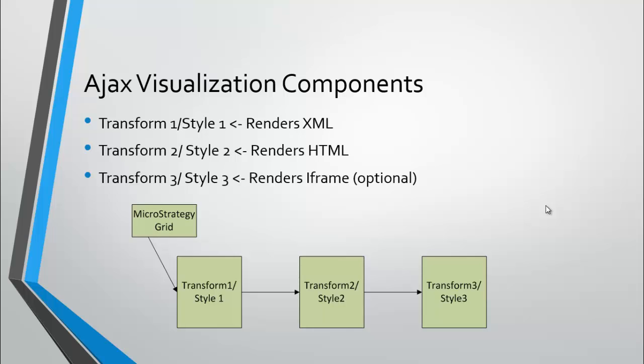From this diagram, users can apply this to a MicroStrategy grid, and that grid can be inside a document or just a report. Once the visualization is applied, the grid sends the data to Transform1, which handles the parsing of the MicroStrategy grid and renders it into XML. That XML is passed to Transform2 where it is consumed, and the logic is performed — this is where you build your visualization, take that data, and insert it into custom code to render or create a visualization. Once that step is complete, it is sent to Transform3 where everything is rendered within an iframe.